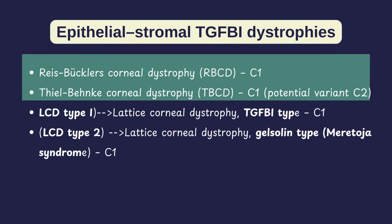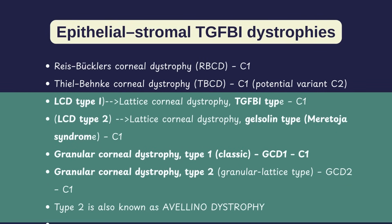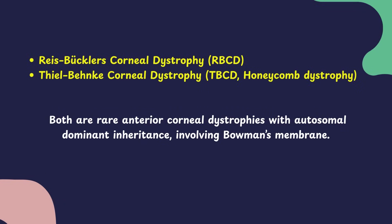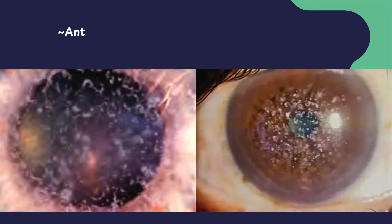Previously, the two Bowman's layer dystrophies were referred to as corneal dystrophy of Bowman's layer type 1 and type 2, and now they are classified as the Rees-Buckler's corneal dystrophy and the Thiel-Benke corneal dystrophy. The other epithelial stromal TGF-β1 dystrophies include the lattice and granular corneal dystrophies, which will be covered in the next video. Today's focus is on RBCD and TBCD. RBCD is classified as category 1 in the IC3D classification and is also referred to as corneal dystrophy of Bowman's layer CDB type 1, or sometimes granular corneal dystrophy type 3.